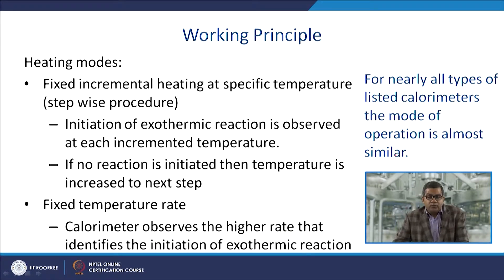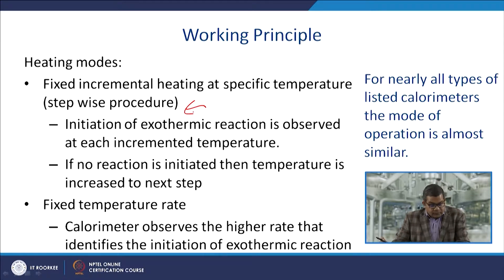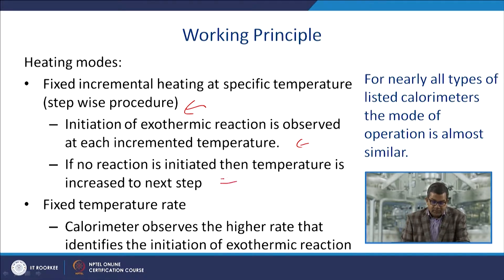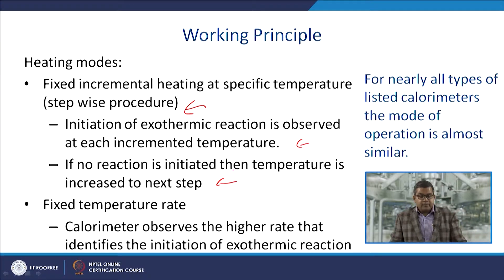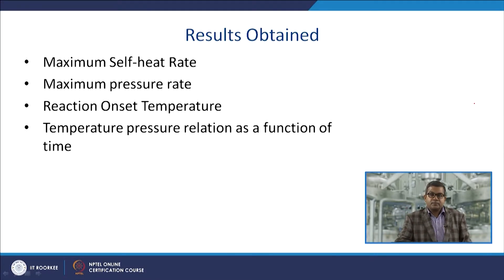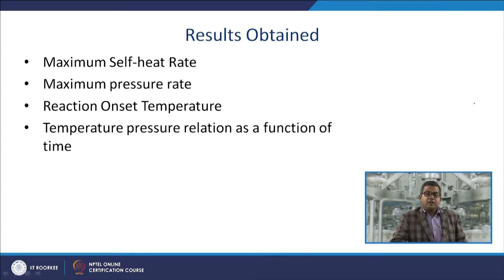The working principles of these calorimeters include a heating mode with fixed incremental temperature steps, where initiation of exothermic reaction is observed at each increment. If no reaction is initiated, the temperature is increased to the next step. Alternatively, a fixed temperature rate mode is used where the calorimeter identifies the initiation of exothermic reactions. Results include maximum self-heat rate, maximum pressure rate, reaction onset temperature, and the temperature-pressure relationship as a function of time.